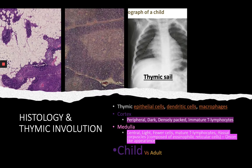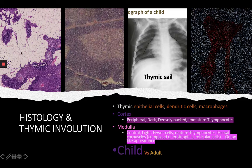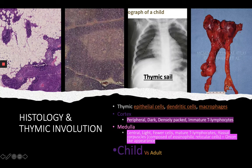You can see that in an adult thymus there is a lot of adipose tissue — fat tissue which has replaced most of the cortex. You can also see here in an autopsy of an adult thymus how the whole structure is composed of adipose tissue.